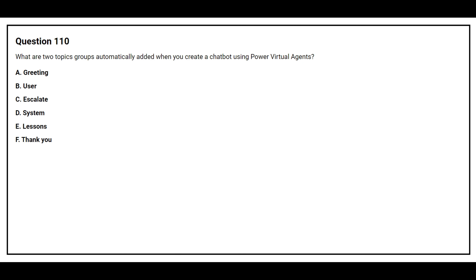Question number 110: What are two topic groups automatically added when you create a chatbot using Power Virtual Agents? Option A: greeting. Option B: user. Option C: escalate. Option D: system. Option E: license. Option F: thank you. The correct answer is Option B.